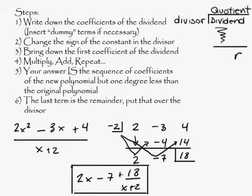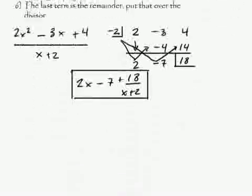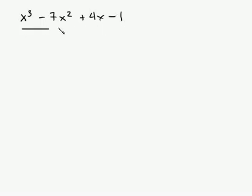Let's do another problem. So let's try this: x cubed minus 7x squared plus 4x minus 1, and that's all over x plus 6. First, write down the coefficients.